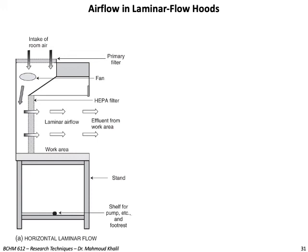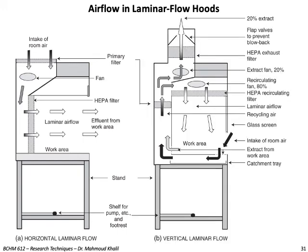Here you can see a diagrammatic sketch for the horizontal laminar flow. You can notice the intake of room air, and the effluent air is coming to the operator. Although the air needs to be filtered through the HEPA filter, it can still convey contamination to the outside. In the vertical laminar flow, air is drawn from the side of the operator to the work area and then either recycled or expelled.